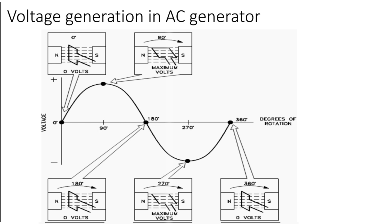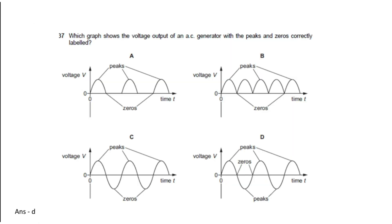When the coil is at 0 degrees, 180 degrees, and 360 degrees, the voltage generation is zero. So the peak is at 90 degrees and 270 degrees, and zero is at 0 degrees, 180 degrees, and 360 degrees. Therefore the correct answer is answer D.